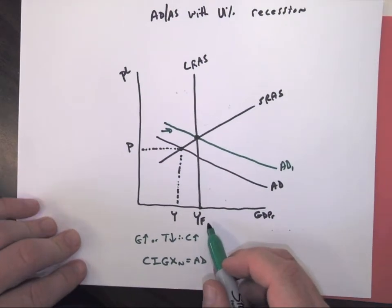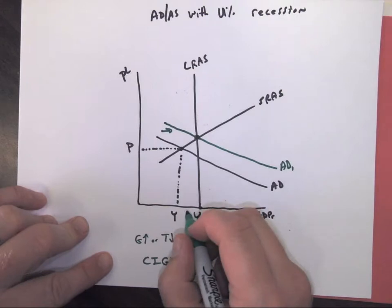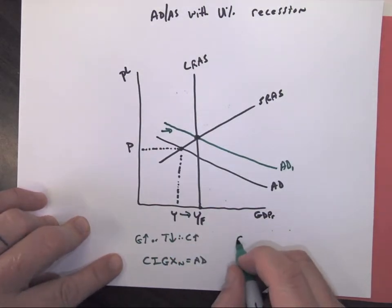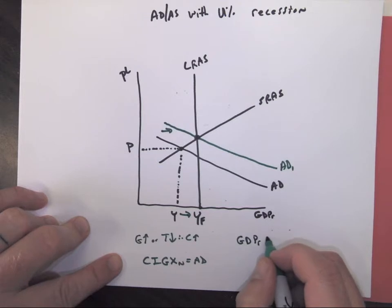So when we do that kind of policy, that's going to end up increasing us to the right. So GDP is going up.